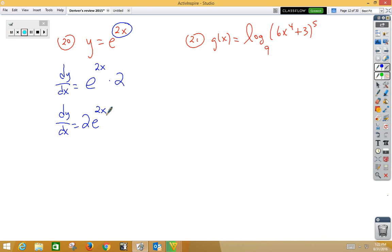In 21, we have a chain rule with a logarithm. Now remember, the derivative of log base a of x would be 1 over x natural log a dx. So let's remember that chain rule. So we have g prime of x is equal to the derivative of the outside, so 1 over, now this x, remember, is really this function here. So we have 6x to the 4th plus 3 to the 5th power.